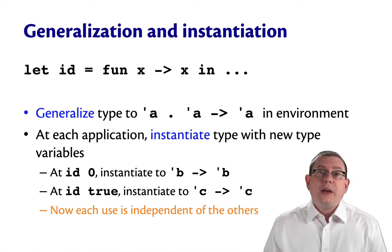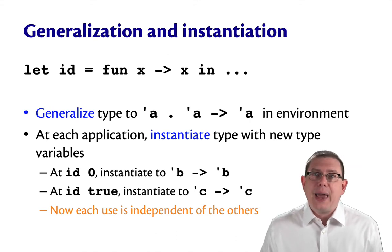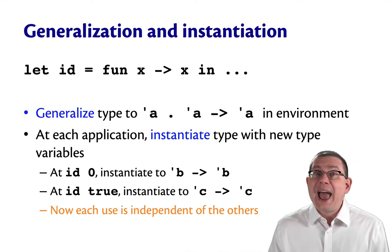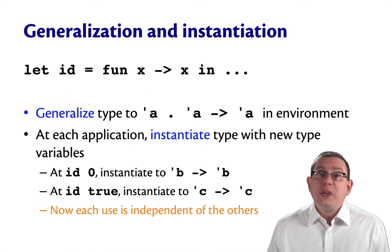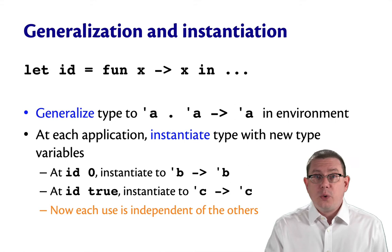And then later, at the application of id to true, it would get instantiated with a different type variable, say gamma arrow gamma. Now, each use of the function is independent of the other uses of the function. So each usage can end up having its own type, whether that's int arrow int or bool arrow bool.